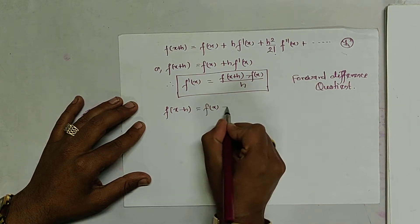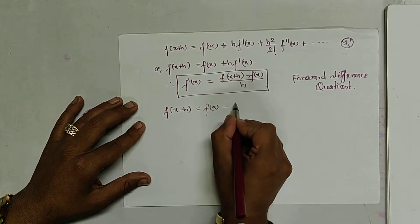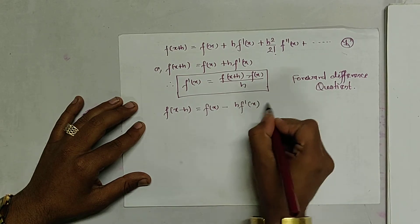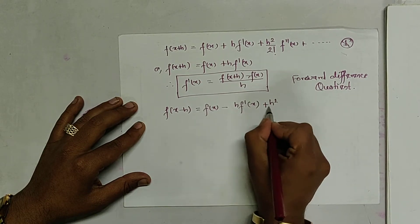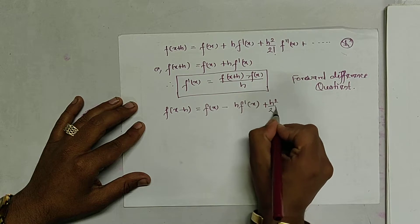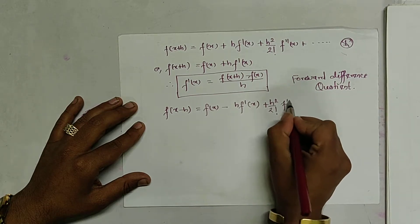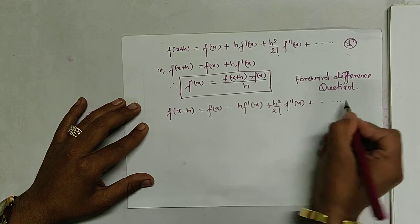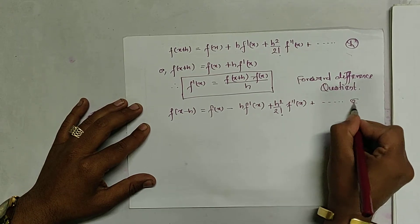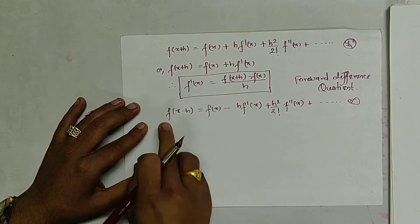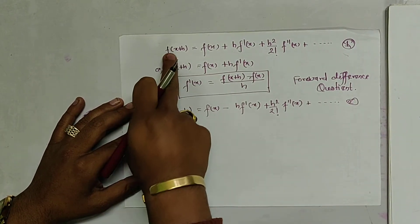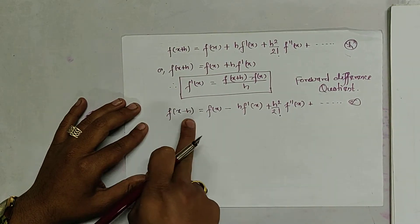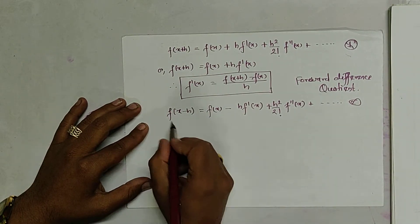Similarly, when we write x minus h, the Taylor series becomes: f(x-h) equals f(x) minus h·f'(x) plus h²/2! · f''(x) plus dot dot dot. The Taylor series becomes like this when x+h is converted into x-h.